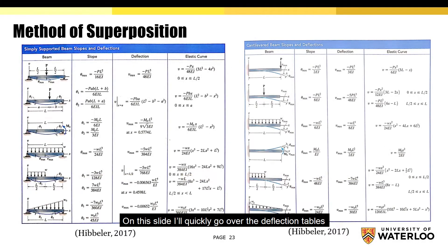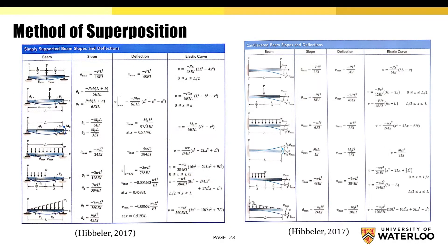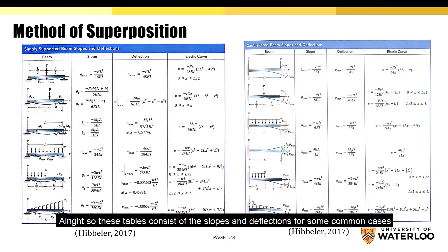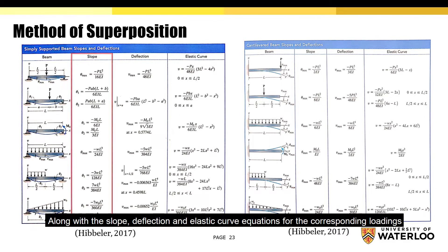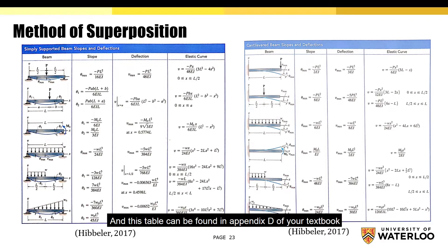On this slide, I'll quickly go over the deflection tables. These tables consist of the slopes and deflections for some common cases. The table includes a picture of the beam along with the slope, deflection, and elastic curve equations for the corresponding loadings. This table can be found in Appendix D of your textbook.